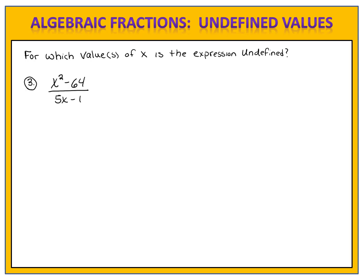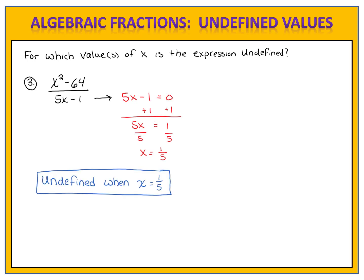Here's another one for you to try. Can you find the values of x for which this expression is undefined? Please pause the video and come back when you're ready to compare answers. We set the denominator equal to zero: 5x minus 1 equals zero, then solve the resulting equation. We find that x equals one-fifth. One-fifth is the excluded value that causes the expression to be undefined, so this fraction is undefined when x equals one-fifth. We could also write our answer in set notation.